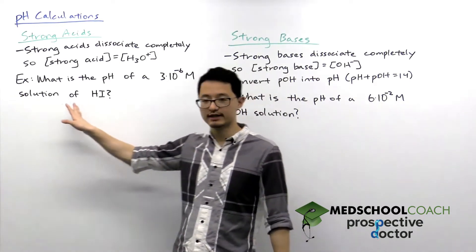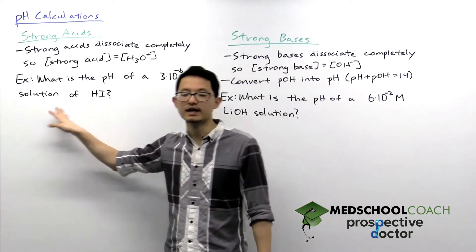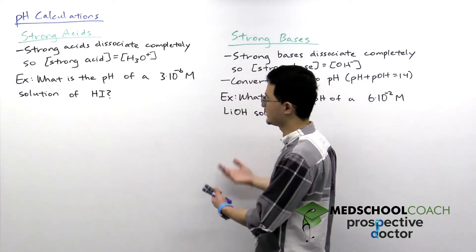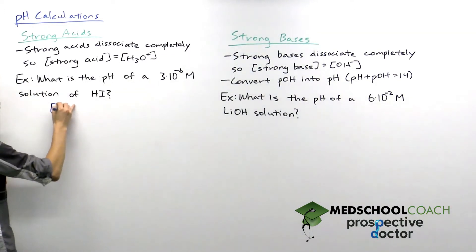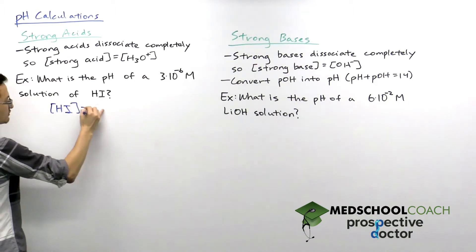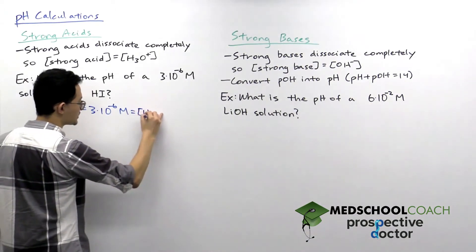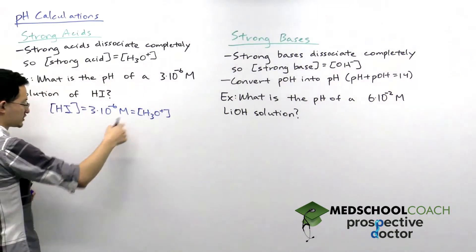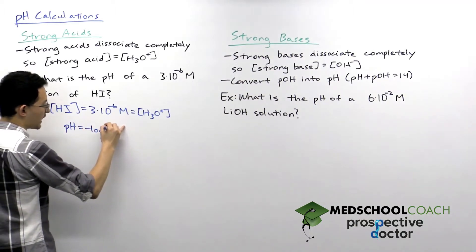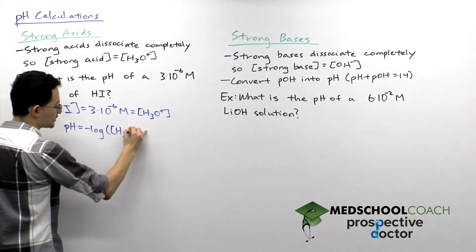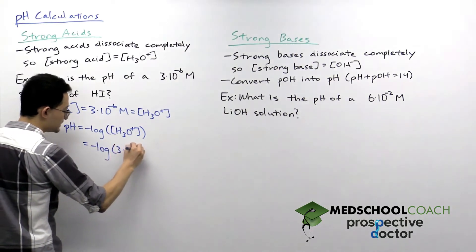To see how this works, we've got an example question: what is the pH of a 3×10⁻⁶ molar solution of HI? Strong acids are assumed to dissociate completely, so the concentration of HI — 3×10⁻⁶ molar — is also the concentration of hydronium ions. If we have the concentration of hydronium ions, we can plug that into the pH equation: negative log of the hydronium ion concentration [H₃O⁺], which gives us negative log of 3×10⁻⁶.